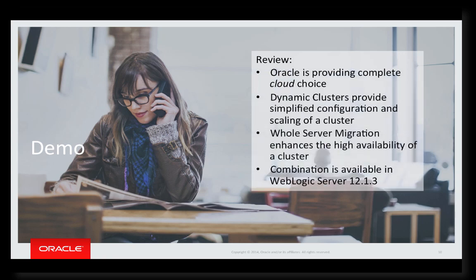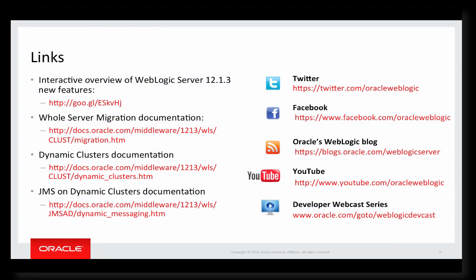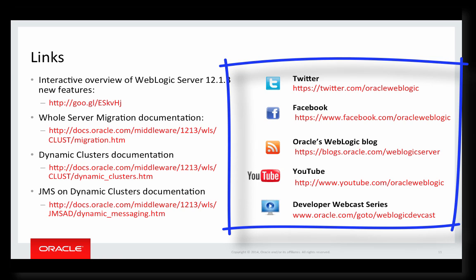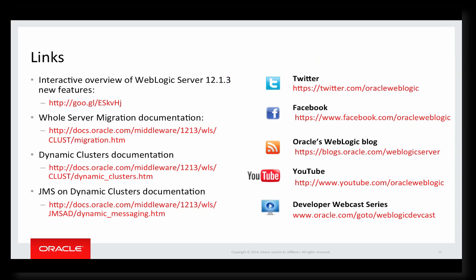To review what we talked about today: Oracle provides complete choice when it comes to cloud, with a full set of capabilities providing infrastructure as a service, platform as a service, and software as a service for private and public cloud. Dynamic clusters provide simplified configuration and simplified scale out for a cluster. Whole server migration enhances high availability for a cluster, especially for JMS. The combination of dynamic clusters and whole server migration is available starting in WebLogic Server 12.1.3. You can download and install WebLogic Server 12.1.3 and try out dynamic clusters yourself, using the interactive tutorial on Oracle Learning Library and the product documentation. You can also get involved in the WebLogic community through Facebook, Twitter, YouTube, and other pathways. Thanks for watching.